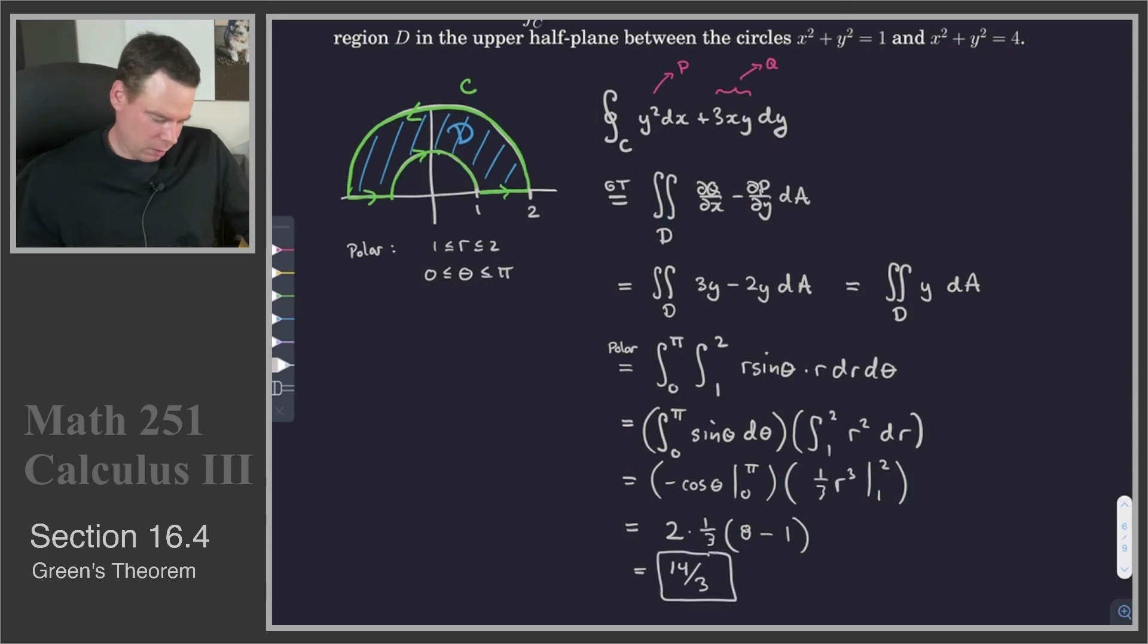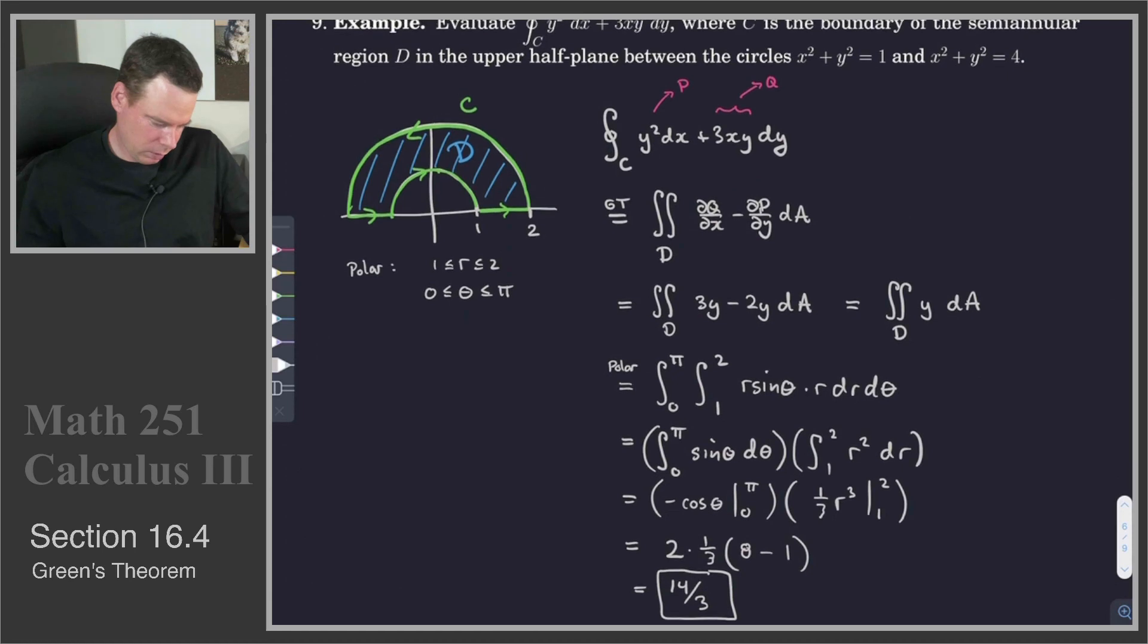And so there's our final result. The value of the line integral we got by converting to an area integral and then using polar coordinates because it was more convenient. Alright, that's it for this example.